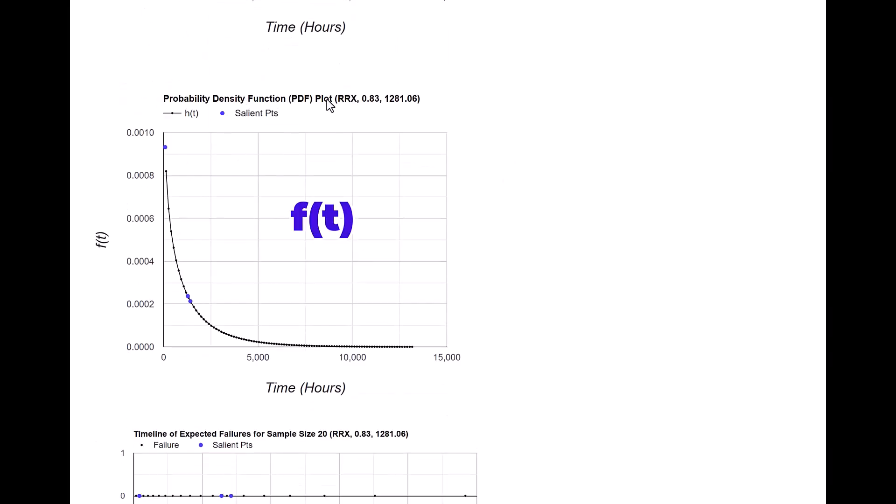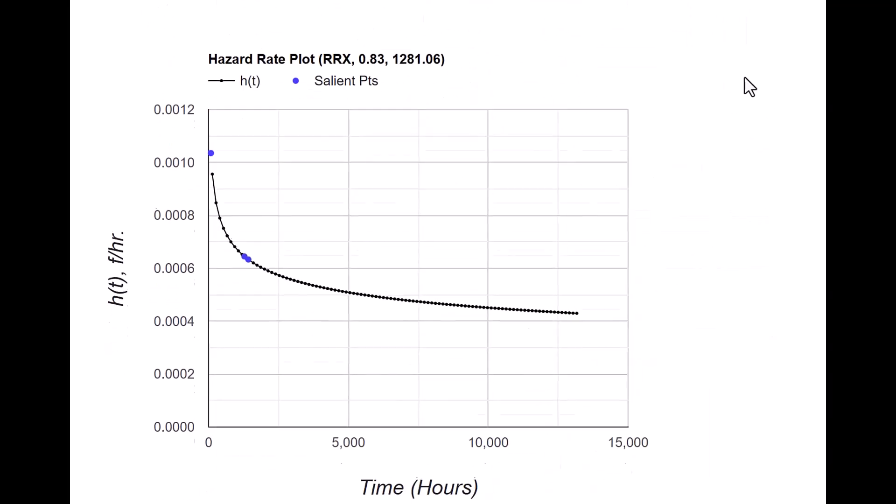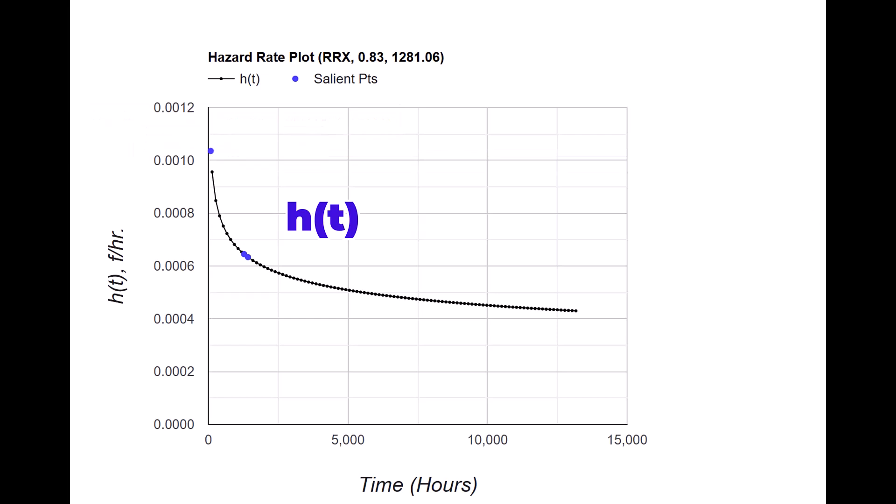Again probability density function pdf plot is also shown here and then you got the timeline of expected failures. This is just showing at what time failures are occurring and then finally there is a hazard plot which looks like the left tail of the bathtub curve.